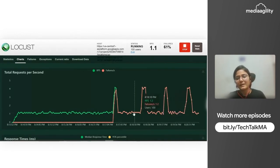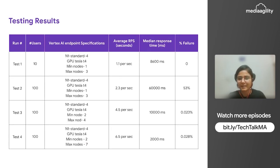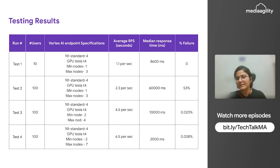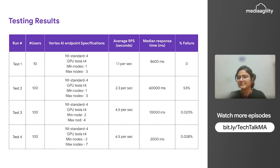To get better performance, I tested it with other machine specifications. So these test cases I have shown you — with 10 users and minimum nodes 1, maximum 3, I am getting around 1 RPS and approximately 8 seconds median response time. Test case two: 100 users with the same machine configuration — there is a failure rate and response time is hitting the 60-second limit.